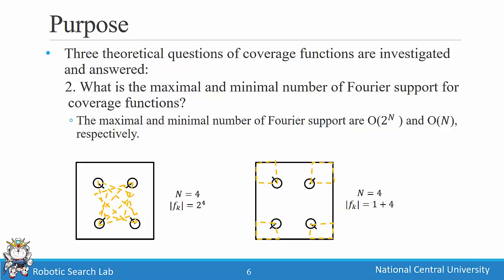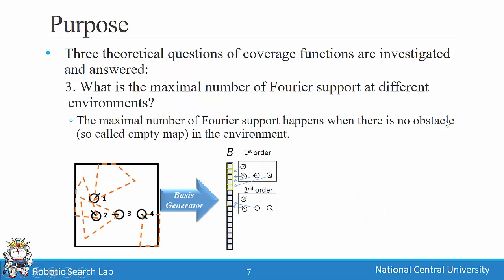The second question is: what is the maximum number of Fourier support for the coverage function? We found the maximum number is two-to-the-n, and the minimum number is n. The third question is: what is the minimum number of Fourier support in different environments? We find that the minimum Fourier support occurs when there is no obstacle in the environment, giving the maximum sparse Fourier support.